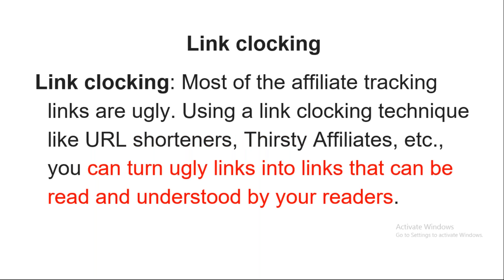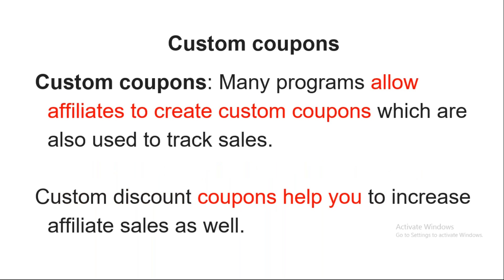Link cloaking — most of the affiliate links are not meaningful links. They contain random characters like X, Y, Z, 1, 2, 3, 4 — that kind of URL. To make them more readable, more SEO-friendly, and more understandable, you can use some tools to change that meaningless URL into a meaningful URL. The content is not changing but the URL is different — that process is called link cloaking.